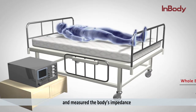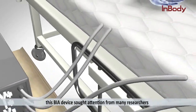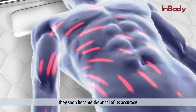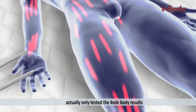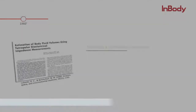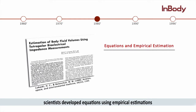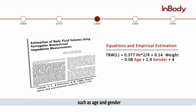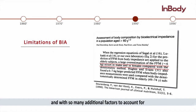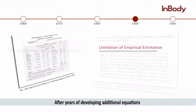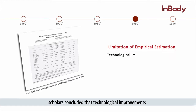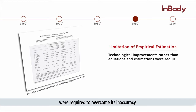Due to its simplicity and convenience, this BIA device attracted attention from many researchers. However, as more researchers started using the device, they soon became skeptical of its accuracy. The devices claimed to produce whole-body results but actually only tested the right half of the body, and their use of a single low frequency inaccurately measured whole-body impedance. To compensate, scientists developed equations using empirical estimations such as age and gender, but the equations were only specific to their test groups. With so many additional factors to account for, no equations were applicable to all. Scholars ultimately concluded that technological improvements — rather than equations and estimations — were required to overcome this inaccuracy.